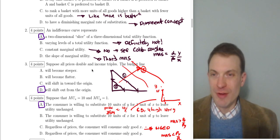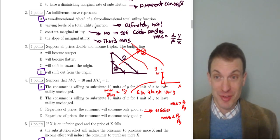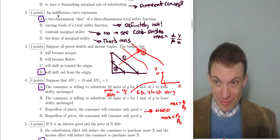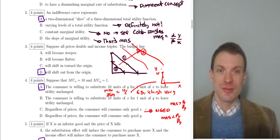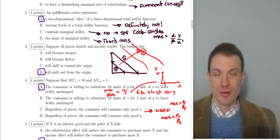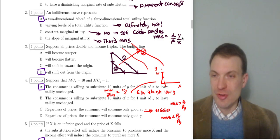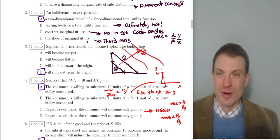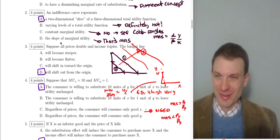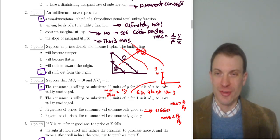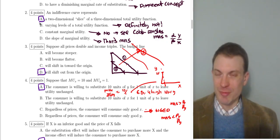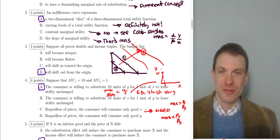An indifference curve represents a constant level of utility — it's not varying levels of total utility, and it's not constant marginal utility. For example, Cobb-Douglas has MRS equal to (alpha/beta) times (y/x), so for a given bundle x,y you'd have a different MRS — that's diminishing marginal rate of substitution, not constant. It's also not the slope of marginal utility, which is a second derivative — a completely different and not particularly useful concept. An indifference curve represents a two-dimensional slice of a three-dimensional total utility function.